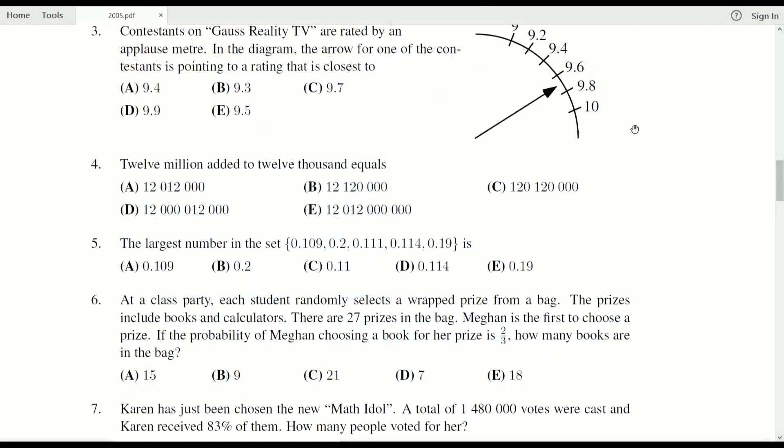This is one that you might be able to just sort of do in your head if you can make these conversions. Twelve million plus twelve thousand is twelve million twelve thousand. Well that's going to be A, but you have to be pretty good at being able to do that conversion between words and the symbols.